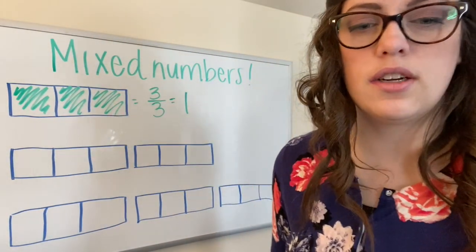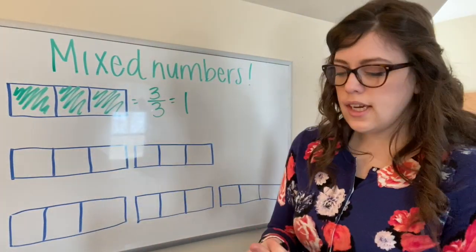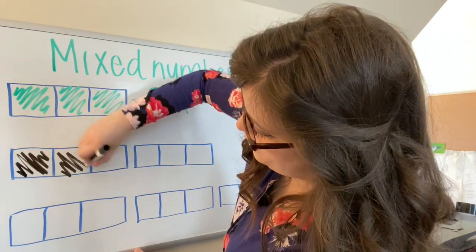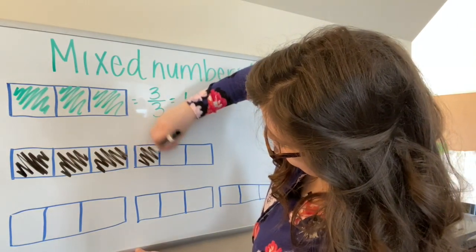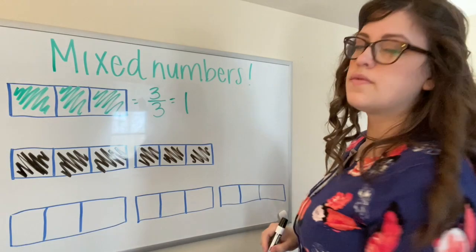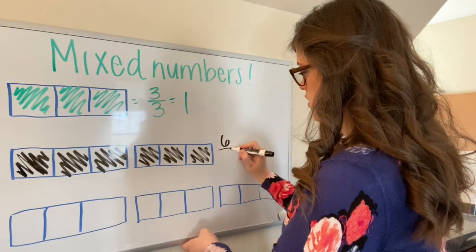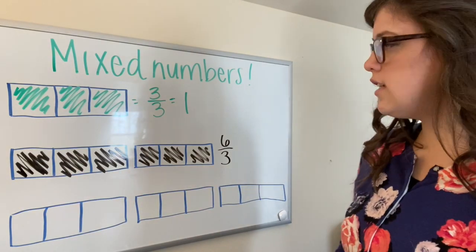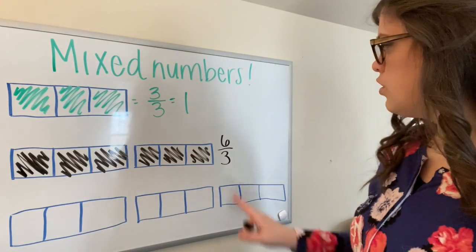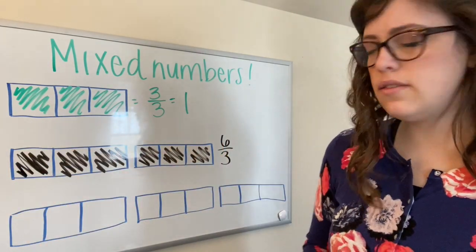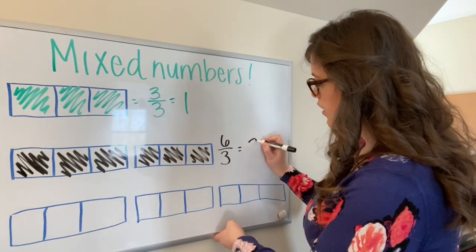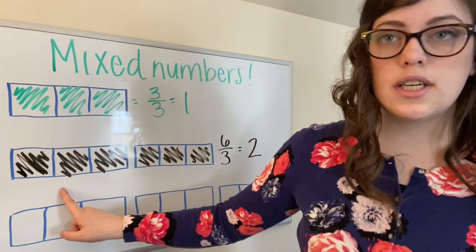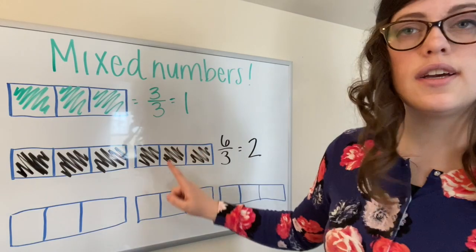I'm going to change colors to make it a little bit easier to see. So in this second example, I've colored in six thirds. I've colored in six total pieces. Each of them is one third of a whole. So now how many wholes do I have? I end up with two because three thirds here is equal to one. Three thirds here is equal to one.